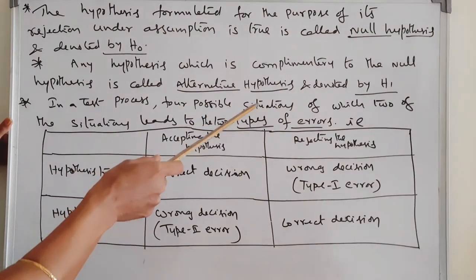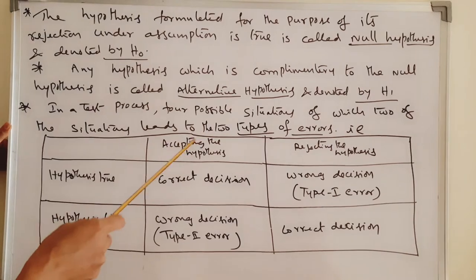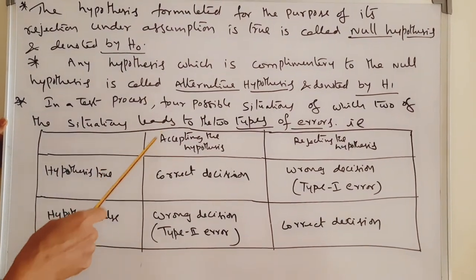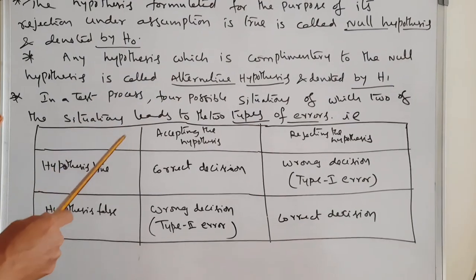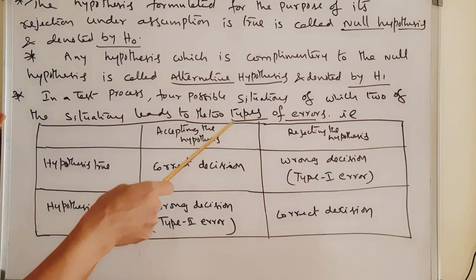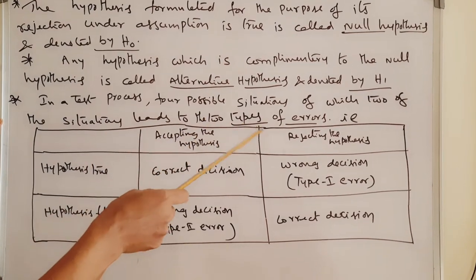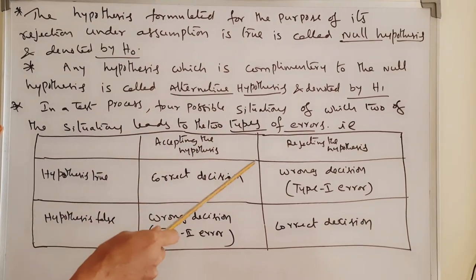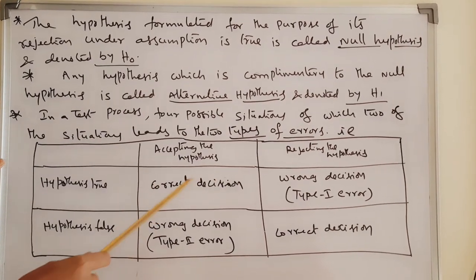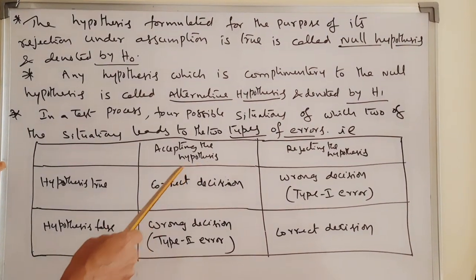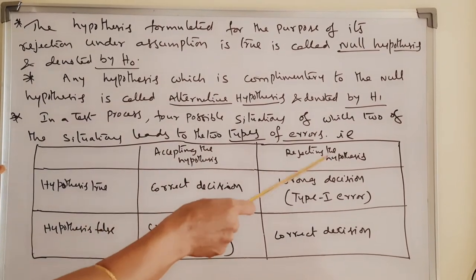In a test process, there are 4 possible situations, of which 2 of the situations lead to types of errors — that is, 2 types: Type 1 and Type 2 errors. I will present this in the form of a table. The columns are: accepting the hypothesis and rejecting the hypothesis.